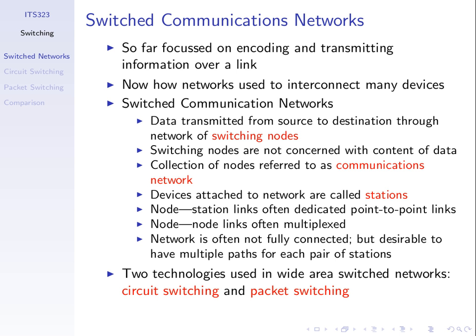A collection of nodes like we have in this example we refer to as a communications network, or simply a network. We will distinguish between the switching nodes — the intermediate nodes in the middle — and the source and destination devices. Those devices, the sources and destinations, are called stations. They care about the data. Their role is not to perform switching; they generate the data and receive the data. The switching nodes forward the data to the right destination.